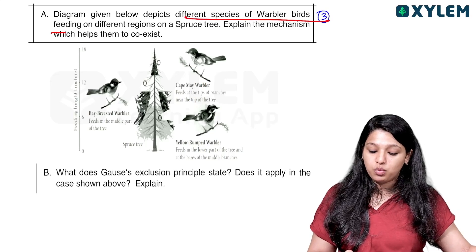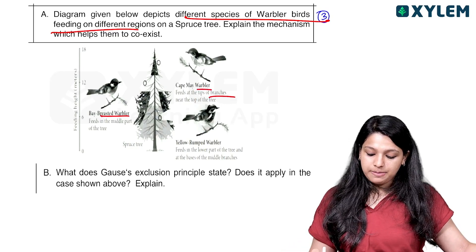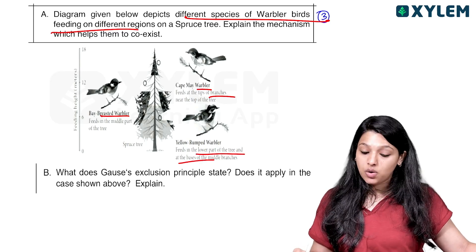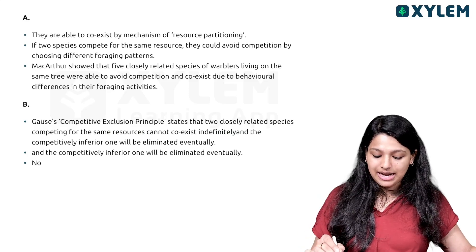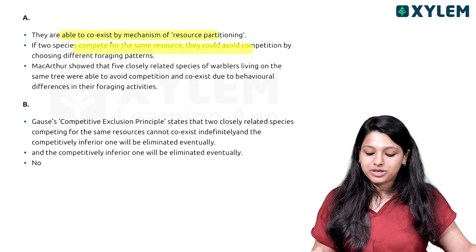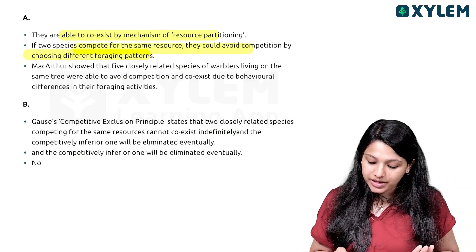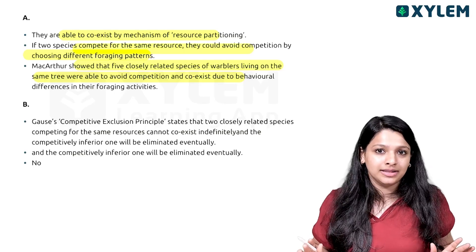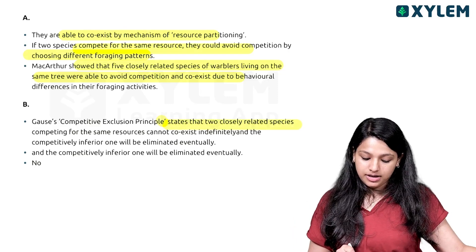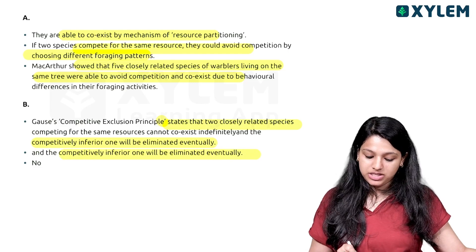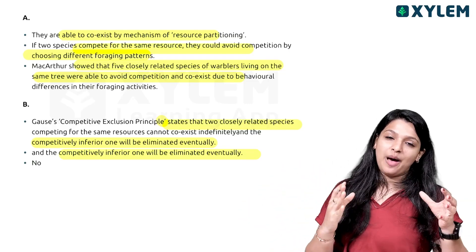The diagram shows different species of warblers feeding on different regions of a spruce tree. What does Gause's competitive exclusion principle state? The warblers represent resource partitioning — they coexist by choosing different foraging patterns. Two species competing for the same resource could avoid competition by choosing different feeding behaviors. Gause's exclusion principle states that the competitively superior species will eliminate the inferior one. Through resource partitioning, competing species can coexist and avoid competitive exclusion.